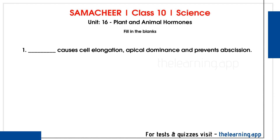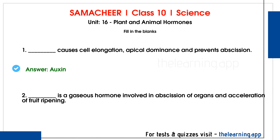Next, fill in the blanks. First question: Dash causes cell elongation, apical dominance, and prevents abscission. Correct answer is auxin. Auxin causes cell elongation and prevents abscission. The hormone that promotes abscission of organs is ethylene.